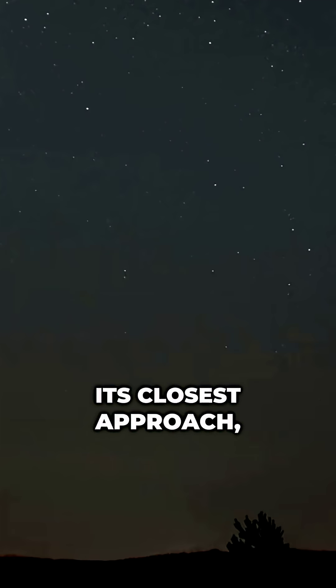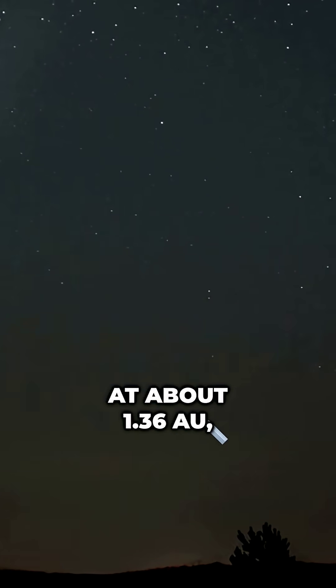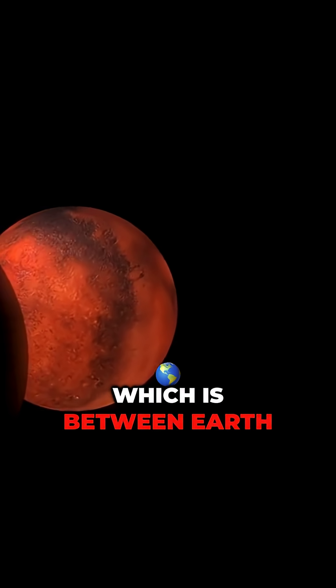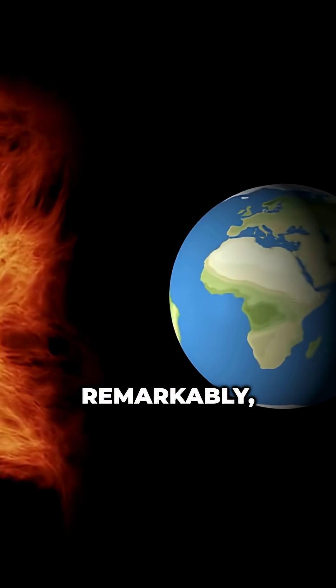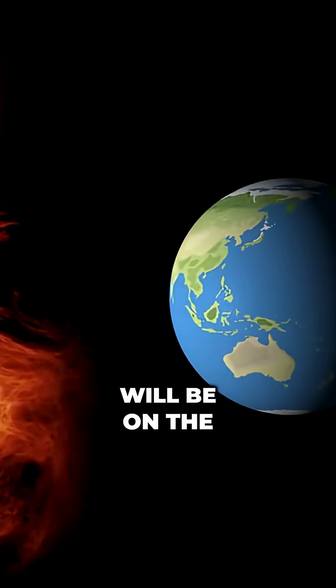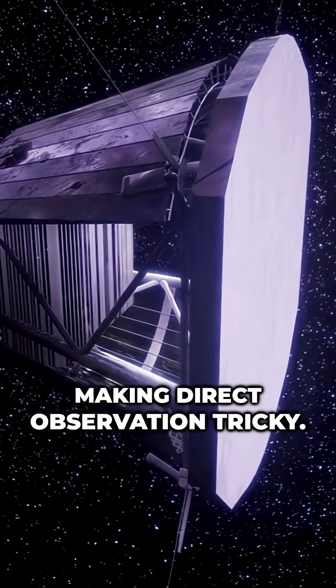The comet will make its closest approach, perihelion, around late October 2025 at about 1.36 AU, which is between Earth and Mars. Remarkably, from Earth's viewpoint, it will be on the opposite side of the sun, making direct observation tricky.